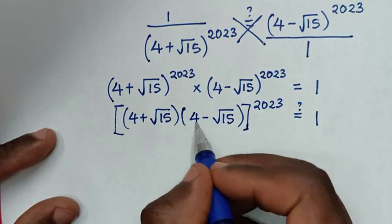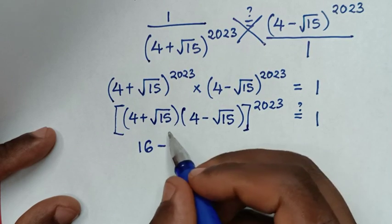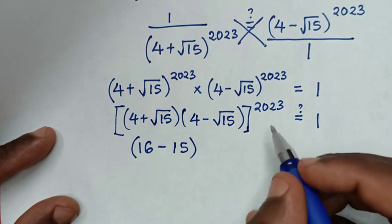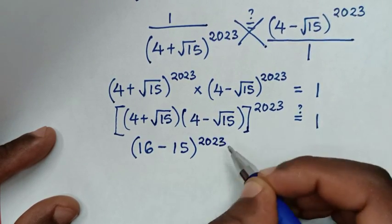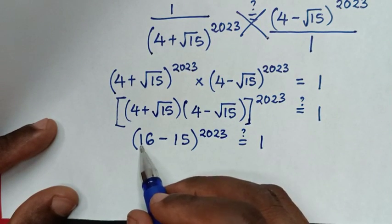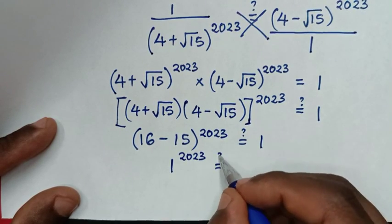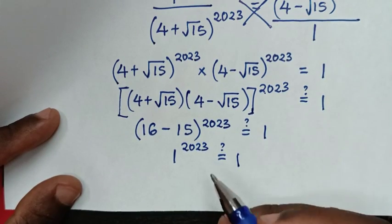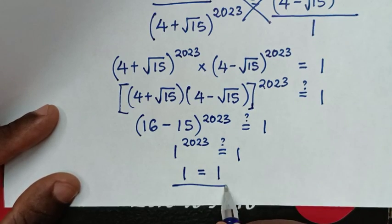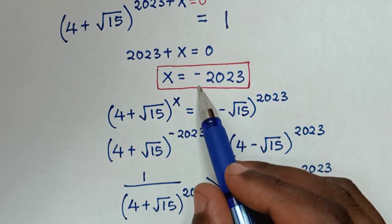Here a is 4 so a squared is 16, and b squared is square root of 15 squared which is 15. So we get (16 minus 15) to the power of 2023, which is 1 to the power of 2023, which equals 1. The left side equals the right side, confirming it is true. Therefore x equals negative 2023.